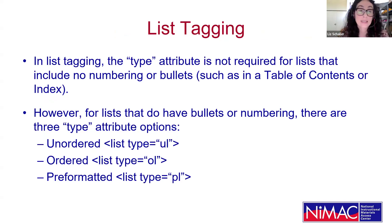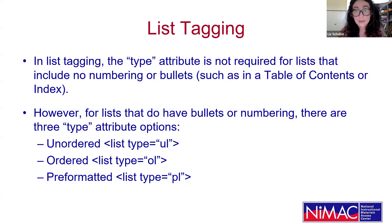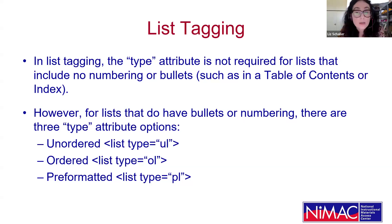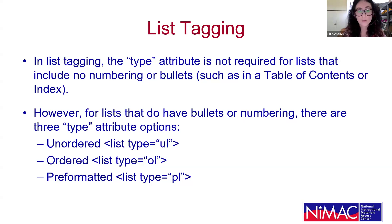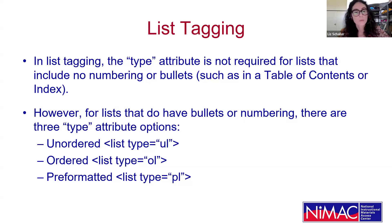First, list tagging. The type attribute is not required for lists that include no numbering or bullets, such as a table of contents or index. However, for lists that do have bullets or numbering, there are three type attribute options: unordered list (UL), ordered list (OL), and pre-formatted list (PL).